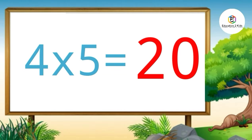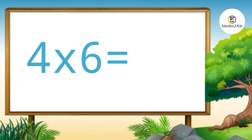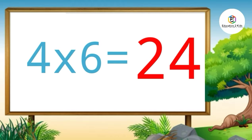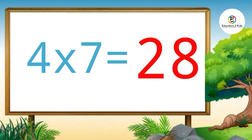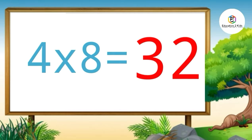Four fives are twenty. Four sixes are twenty-four. Four sevens are twenty-eight. Four eights are thirty-two.